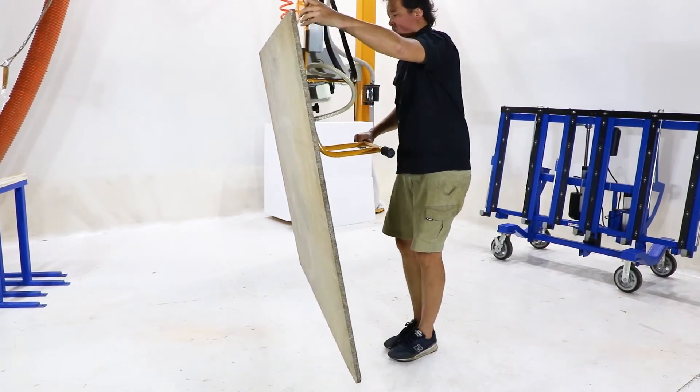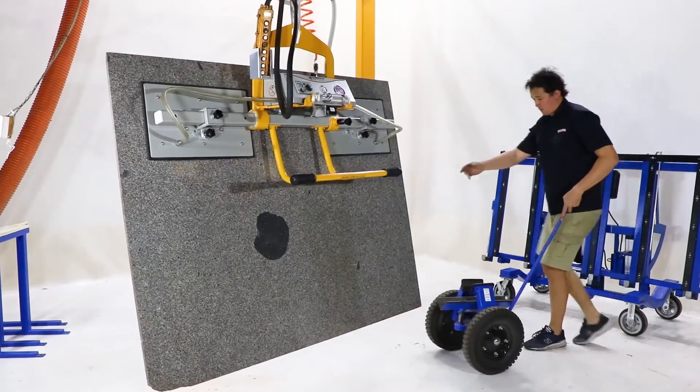This vacuum lifter is ideal for unloading saw tables, especially in stone yards with low hedgerow.